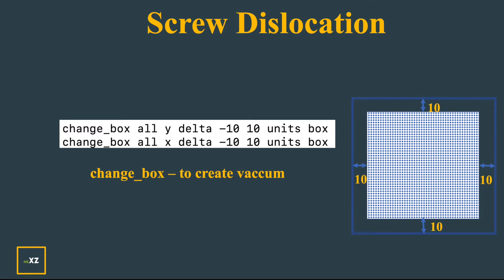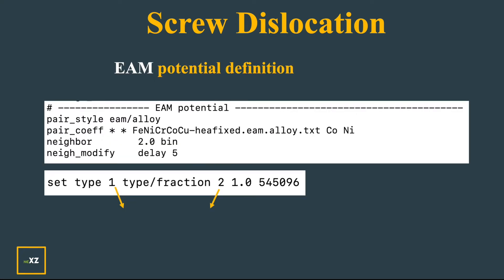Later I define the EAM potential. I use the pair style eam/alloy and the pair coefficient reads the potential file. I used cobalt and nickel. Cobalt is the first atom type which I created with create_atoms 1, and nickel is the second atom type.